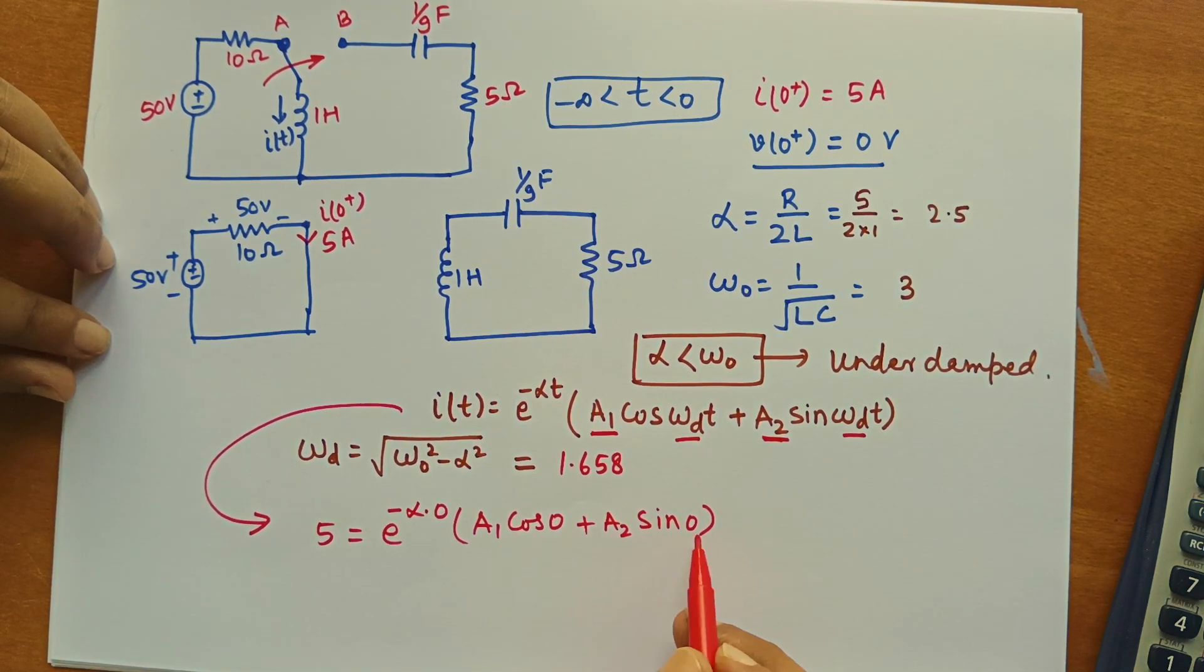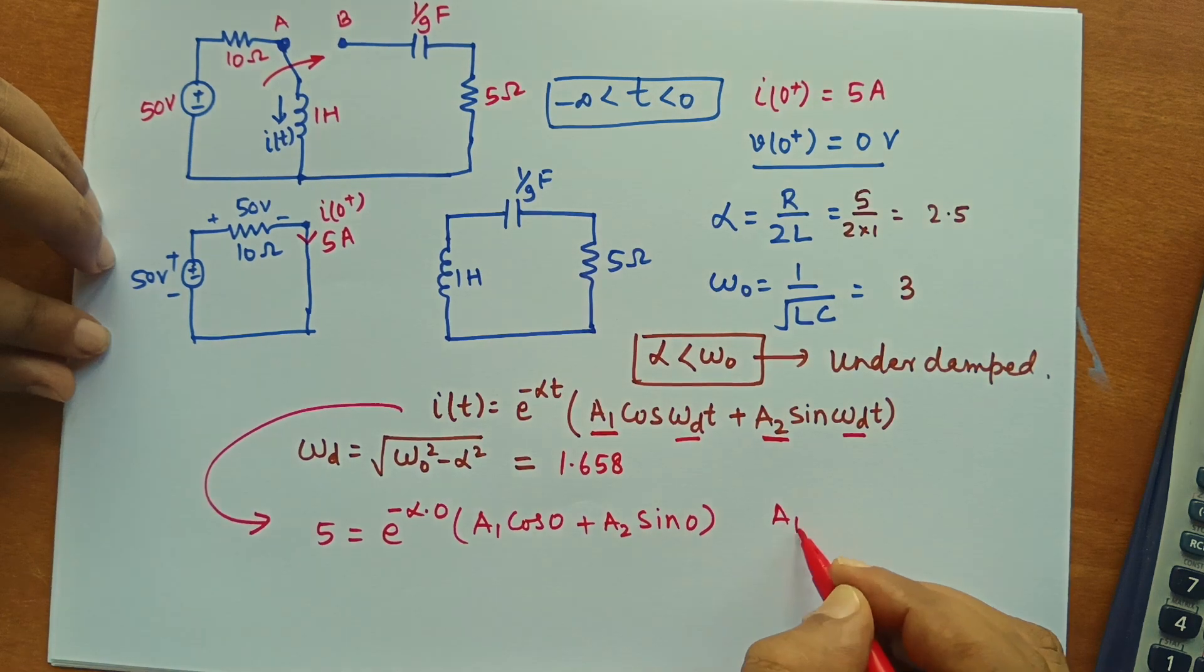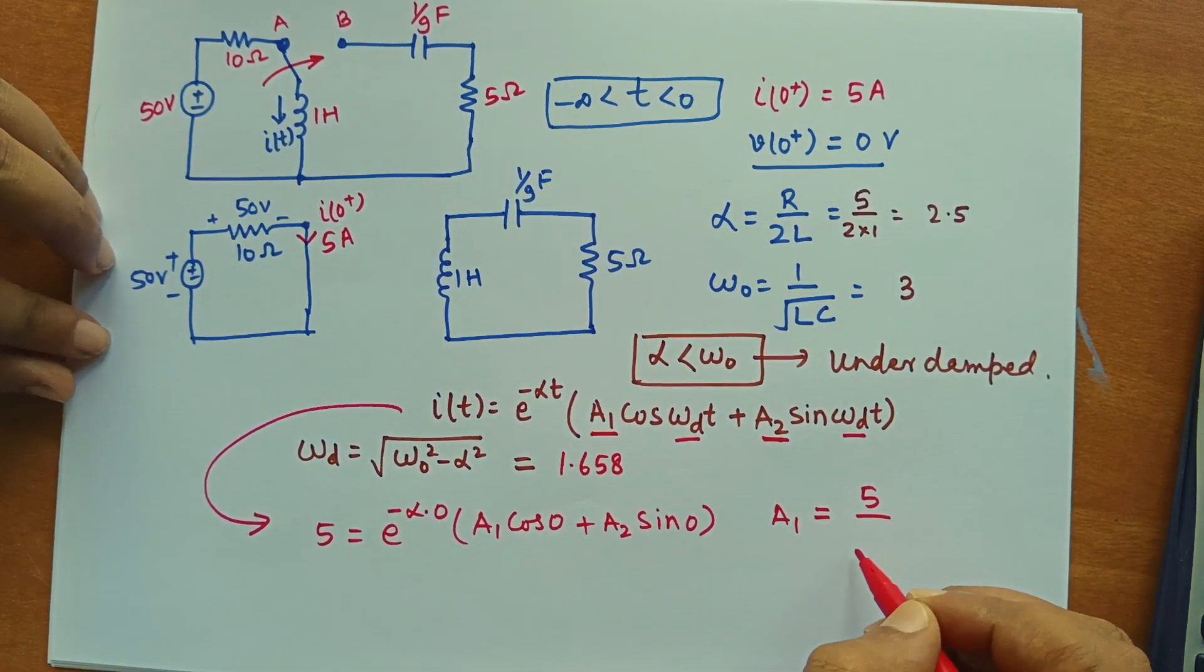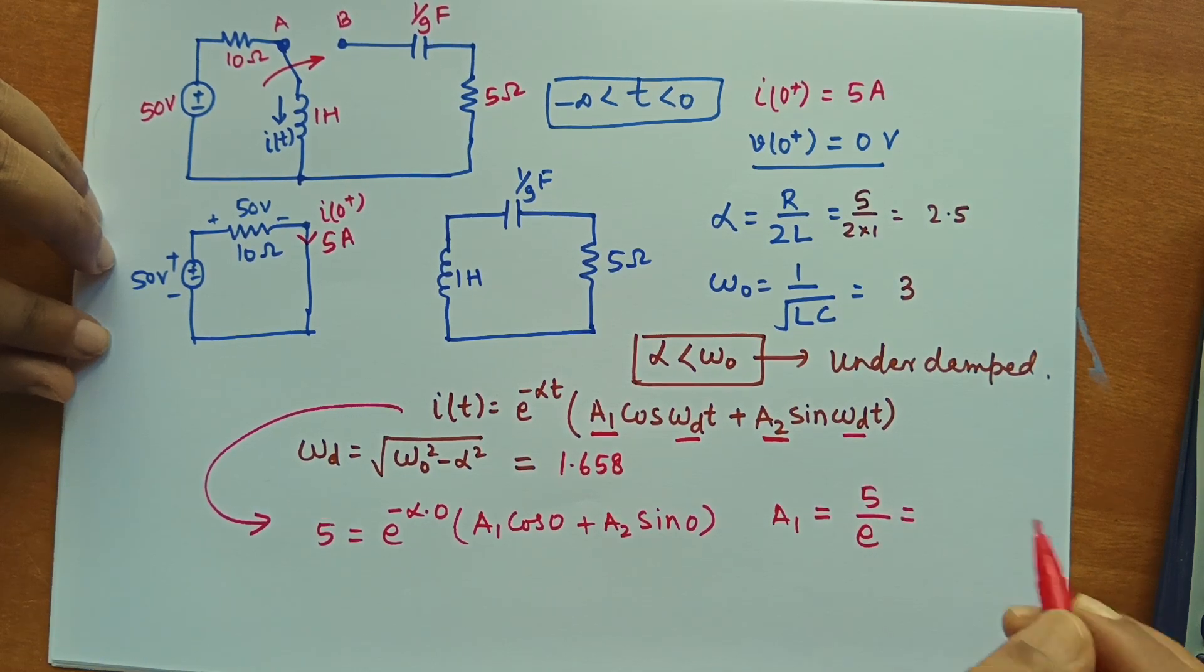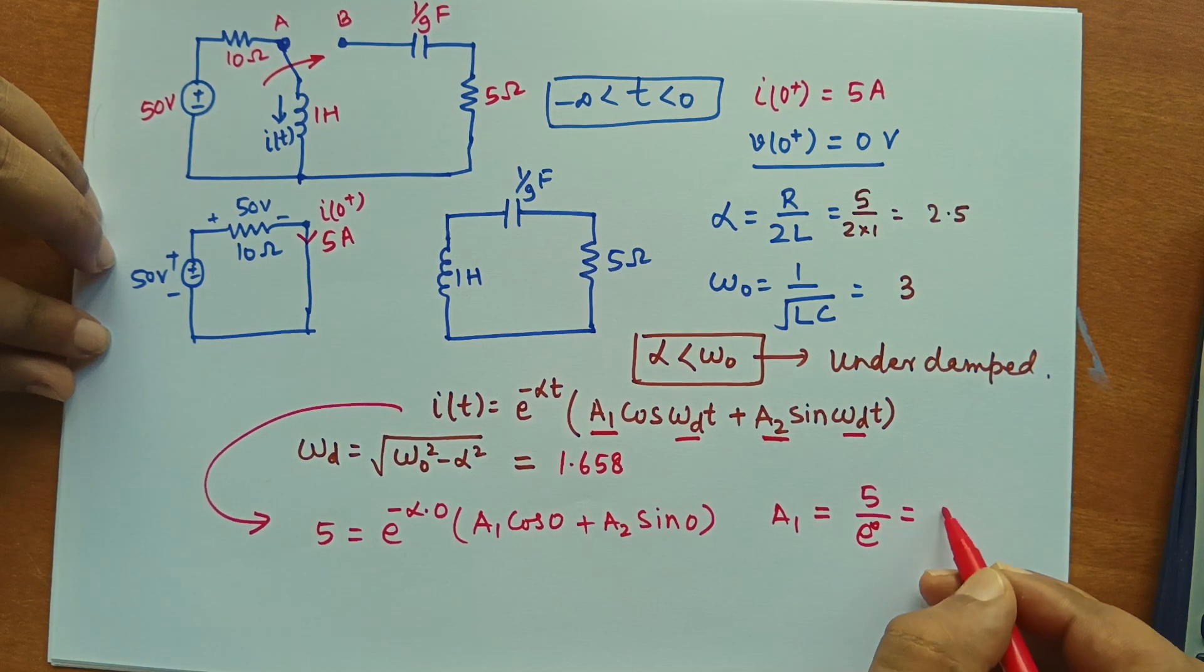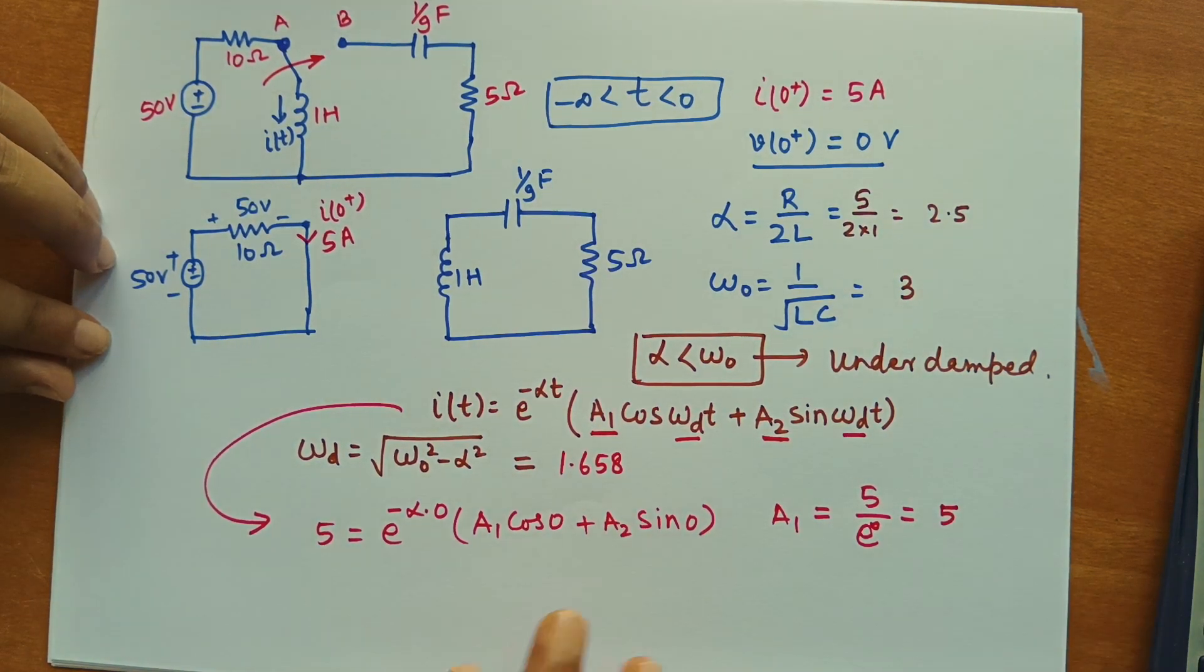So A2 sin 0 is 0. We have A1 equal to 5 by e. 5 by e to the power 0. So 5. It's 5. A1 is 5.